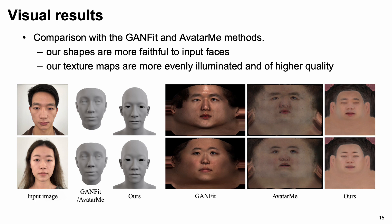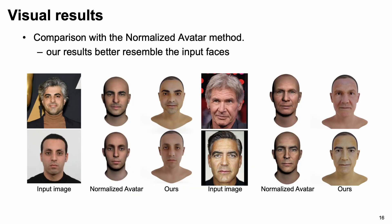These figures show the visual comparison with GANFET and AVATARM methods. Note that there are undesired shadows and uneven shadings in the UV maps obtained by GANFET and AVATARM. In contrast, our reconstructed shapes are more faithful to input faces, and our recovered texture maps are more evenly illuminated and of higher quality. These figures also show the visual comparison with the normalized AVATARM method, where our results better resemble the input faces, mainly thanks to the more powerful expressive texture decoder trained on our much larger dataset.